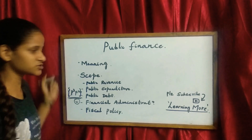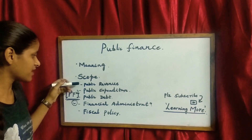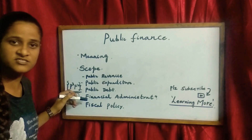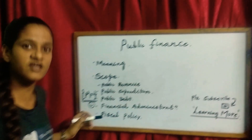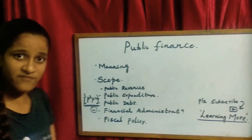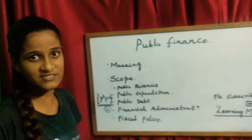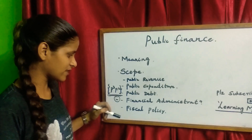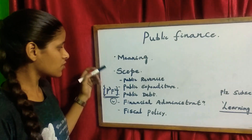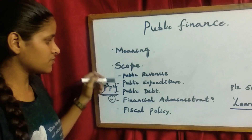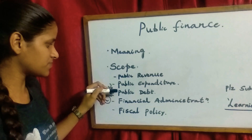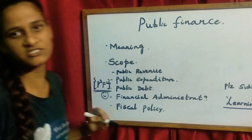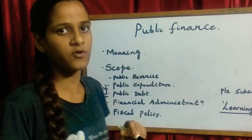Next we will come to scope. When we come to scope, we have public revenue, public expenditure, public debt, financial administration and fiscal policy. I have made it easy for you guys — P cube and F square. P cube means public revenue, public expenditure, public debt, and F square refers to financial administration and fiscal policy.